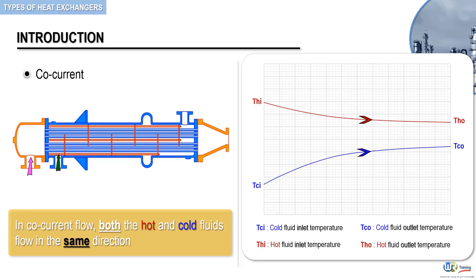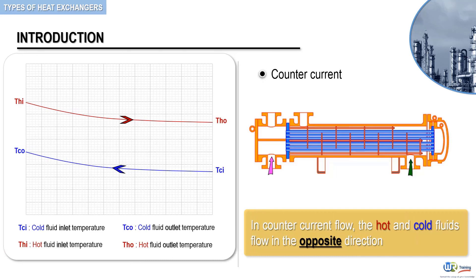On the other hand, in a counter-current configuration, the temperature of the cold fluid entering the heat exchanger increases, and the temperature of the hot fluid entering the exchanger decreases from Thi to Tho as the hot fluid flows through the tubes.